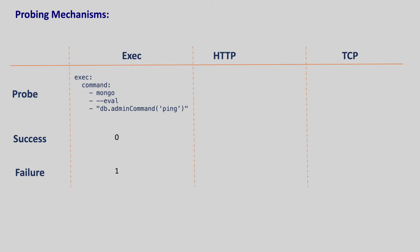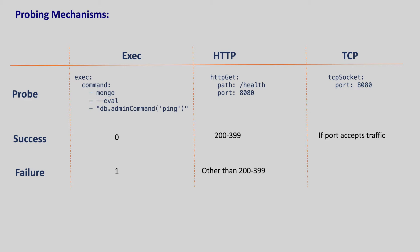The next mechanism is by making network calls. With this mechanism we ask Kubernetes to make an HTTP call to a URL within the container. Kubernetes assumes a container is healthy if the container issues an HTTP response in the 200 to 399 range, otherwise it assumes the container as unhealthy. The next one is using TCP — the probe succeeds if the specific container port is accepting traffic, else it is considered a failure. We can also make a gRPC health checking request to a port inside the container and use its result to determine whether the probe succeeded.